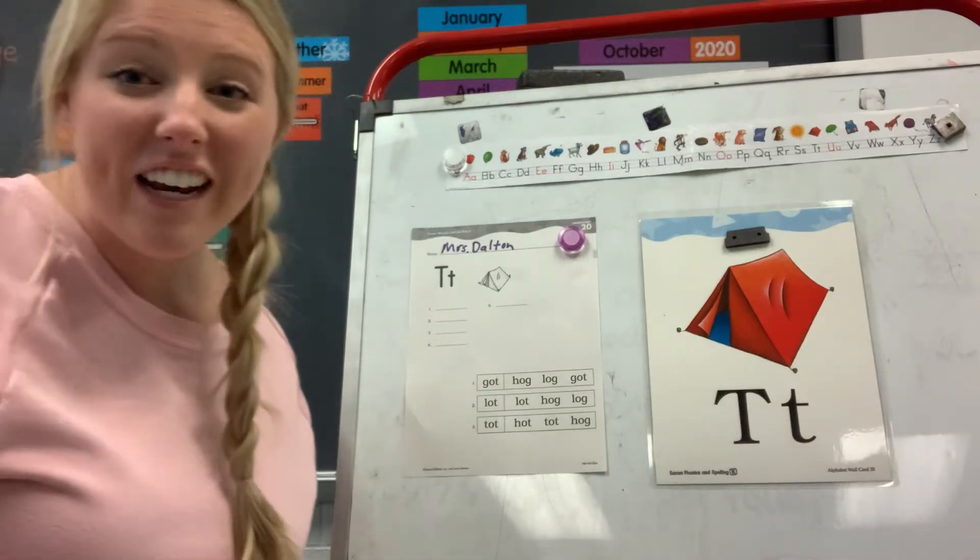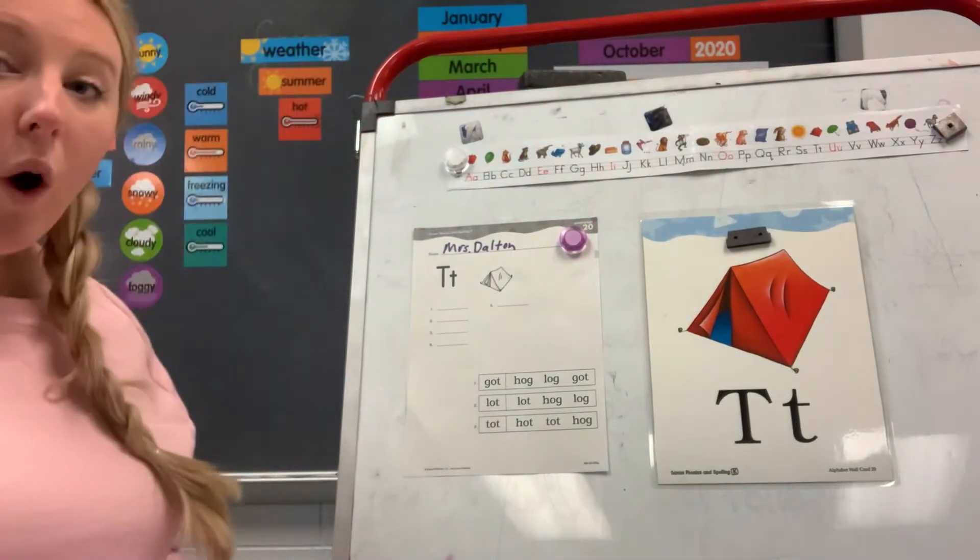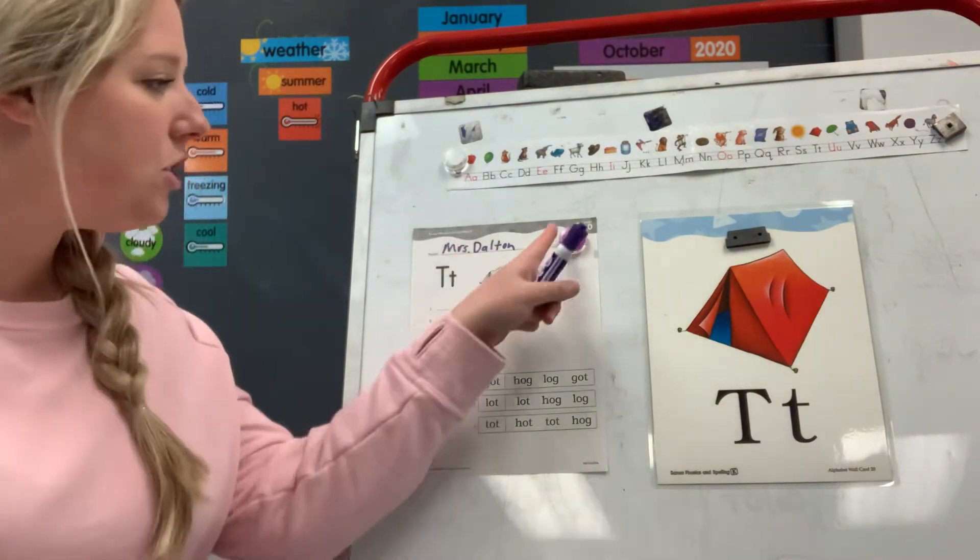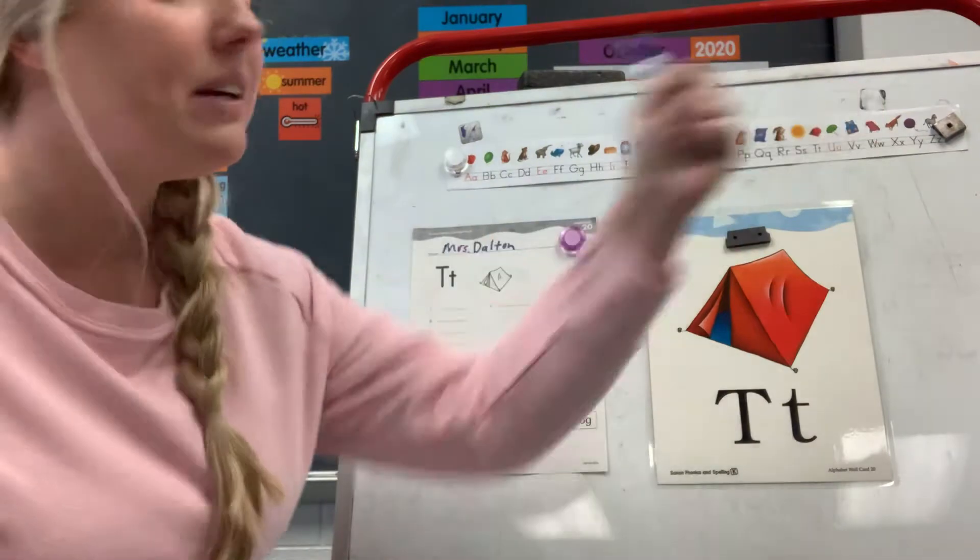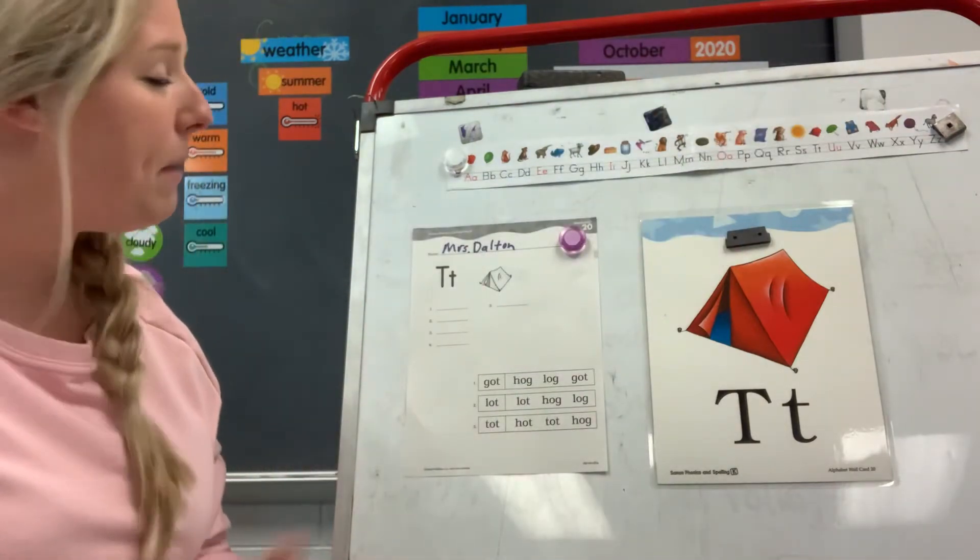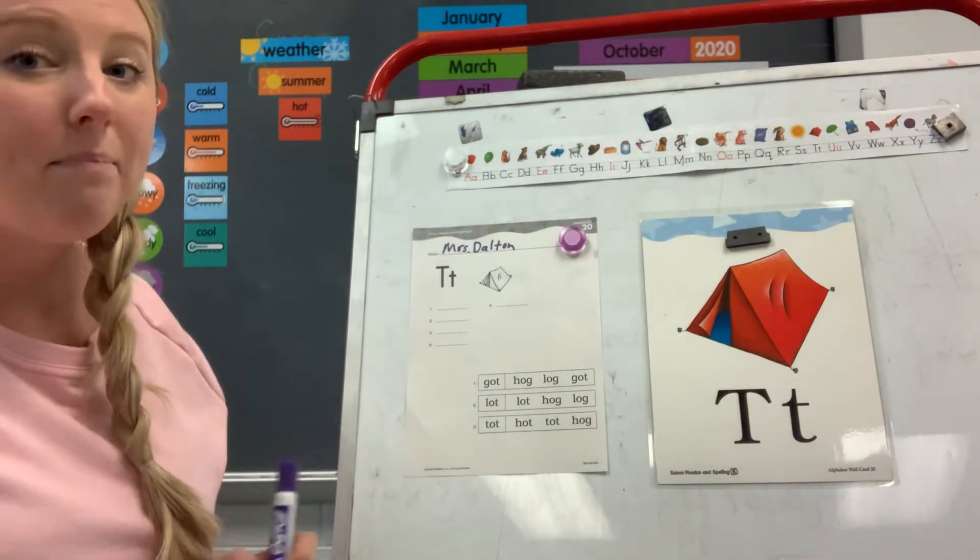Hey boys and girls, welcome to your phonics lesson today. You're going to need worksheet number 20, that's a two zero, so make sure you have that sheet that looks like mine. You're also going to need your alphabet handwriting strip and then put your name on your paper, okay?